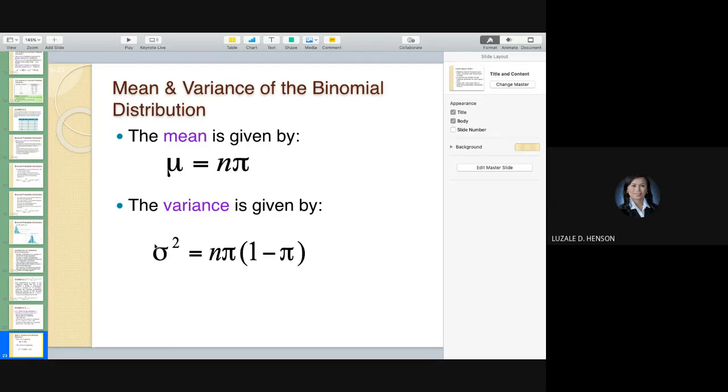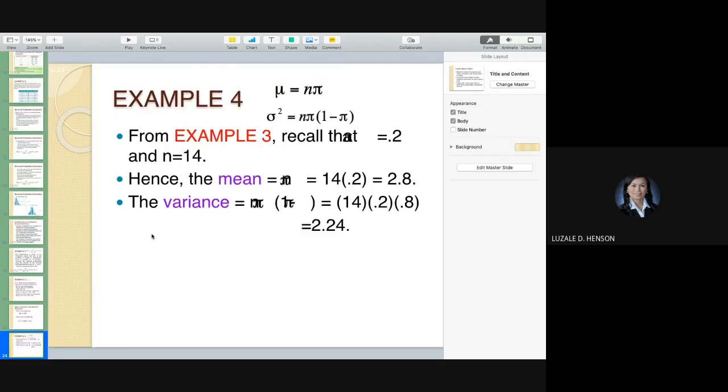In our example, your pi is 0.2, your n is 14. So n times pi is just 0.2 times 14, so you have a mean of 2.8. And the variance, how? This probability distribution is equal to 14 times 0.2 times 0.8, which is 2.24. And the standard deviation is equal to the square root of this variance.